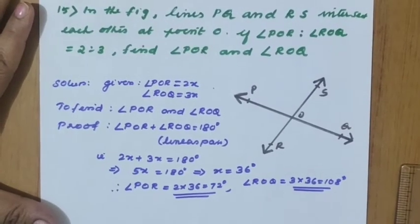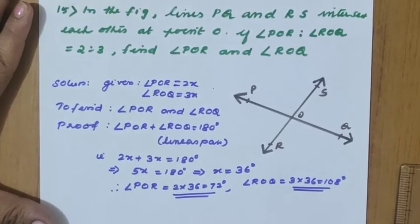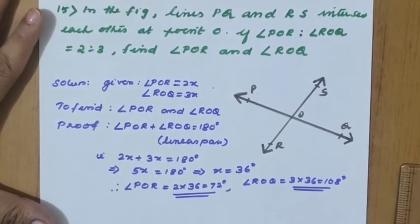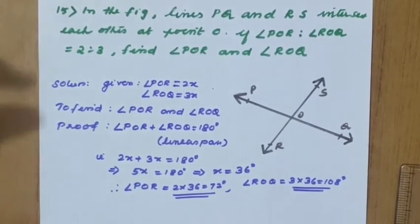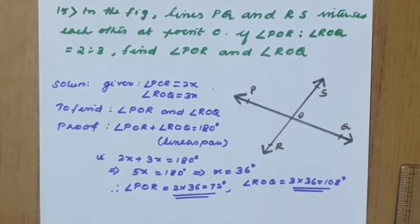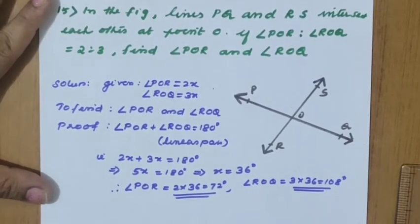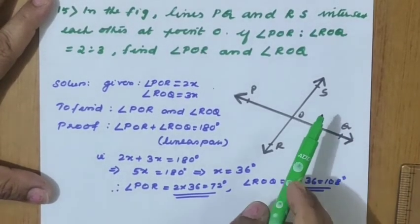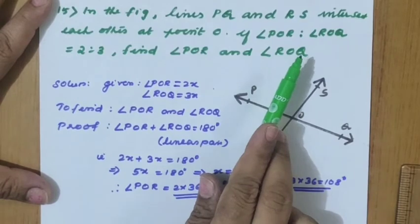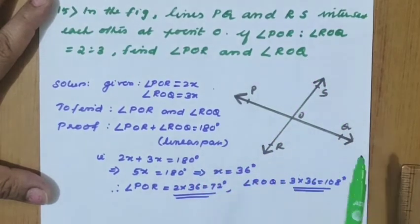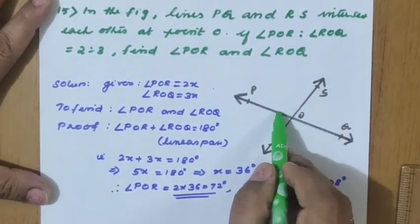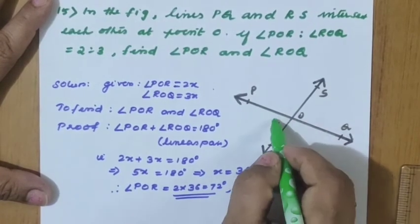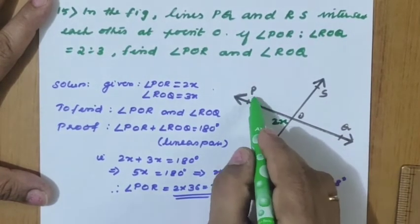Question 15: in the figure, lines PQ and RS intersect each other at point O. If angle POR to angle ROQ equals 2 to 3, find angle POR and angle ROQ. The diagram is already given. Since the ratio is 2:3, we write POR as 2x.